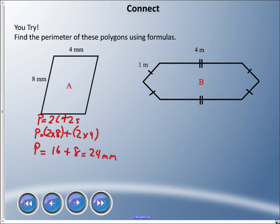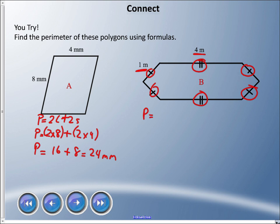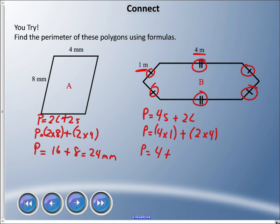Now for polygon B — an irregular hexagon. Look at the hatch marks indicating congruent sides. There are four sides with single hatch marks — those are all 1 meter — and two sides with double hatch marks — those are 4 meters each. So we can write our own formula: P = 4S + 2L, where S is the 1-meter side.